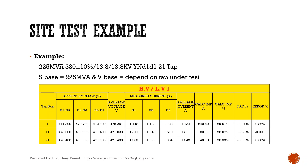Our example: power transformer 225 MVA, 380 with ±10% over 13.8 over 13.8 kV, with vector group YND1D1, and 21 taps. Power base is 225 MVA and voltage base will depend on the tap under test. The results and the calculated errors are shown for the high voltage winding and the first low voltage winding.